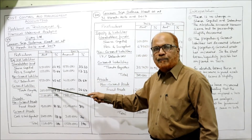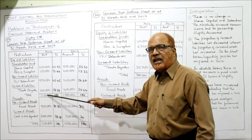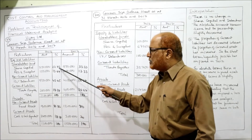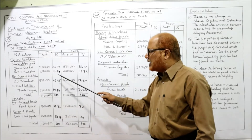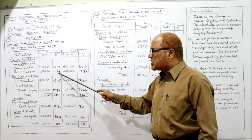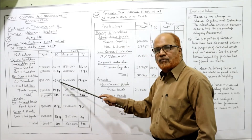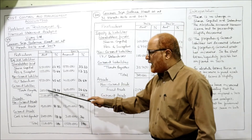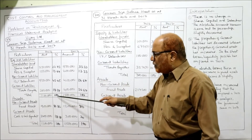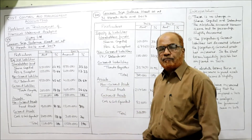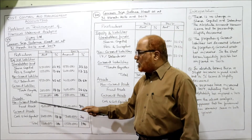So: 2 lakh 50,000 divided by 11 lakh into 100 = 22.73%; 1 lakh 50,000 divided by 11 lakh into 100 = 13.64%; 5 lakh divided by 11 lakh into 100 = 45.45%; 2 lakh divided by 11 lakh into 100 = 18.18%. If you add these up you'll get 100%.